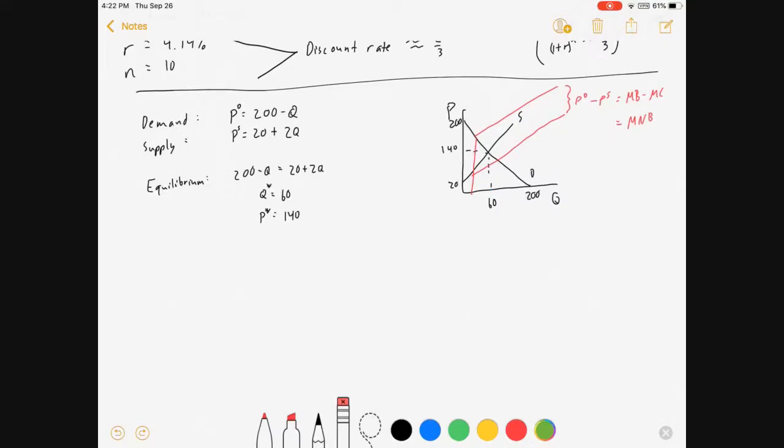So what marginal net benefits is giving us is the distance between the demand curve and the supply curve. And we're going to be doing a lot with this. So marginal net benefits then, marginal benefits minus marginal costs, demand price minus supply price. Plug in both equations. The demand curve minus the supply curve. Sorry, inverse demand minus inverse supply. And you're going to get 180 minus 3Q.